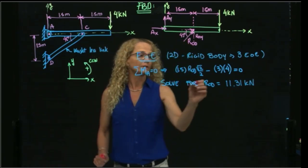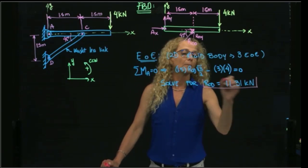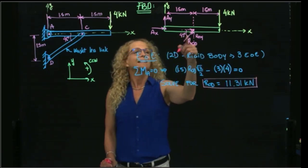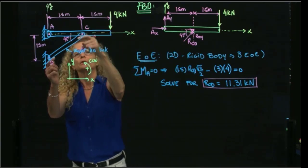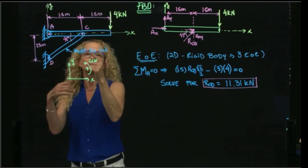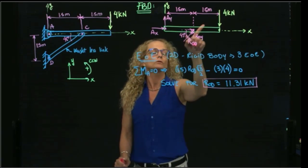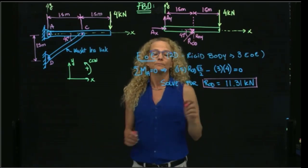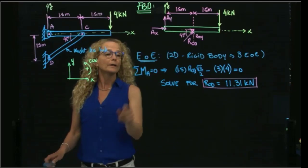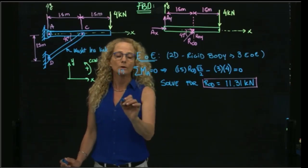And it gives me a positive value. Therefore, my assumption that this weightless link was in compression, by action and reaction, I put a positive reaction. It was correct. Now that we have, this is our first equation. Now that we have our first equation, let's do the second equation, which is adding forces in X.